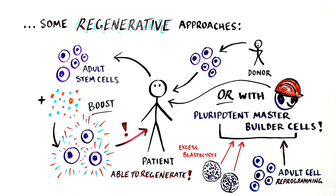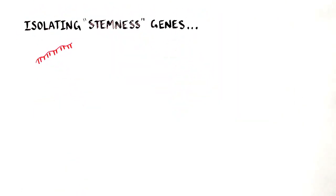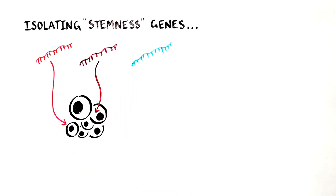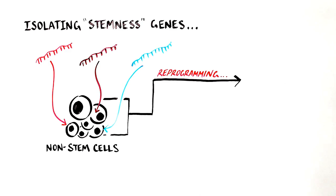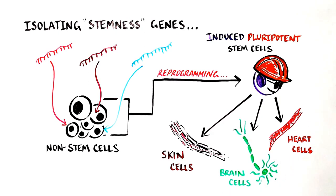The generation of induced pluripotent stem cells was made possible when scientists identified the genes that control the stemness of pluripotent master builder stem cells. By isolating these genes and introducing them into non-stem cells, they reprogram them into a pluripotent stem cell state, in which they are now able to develop into any cell type.